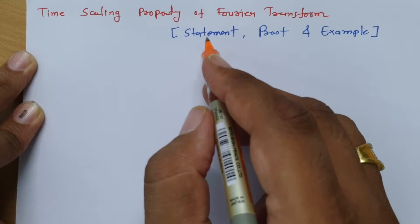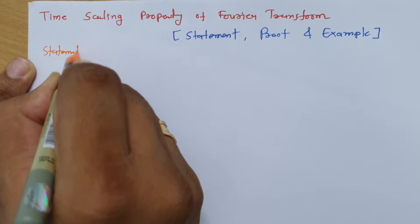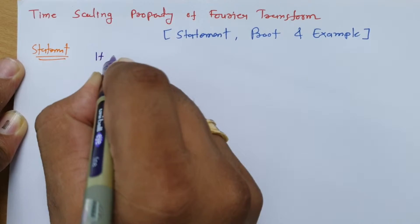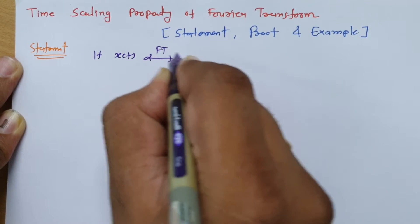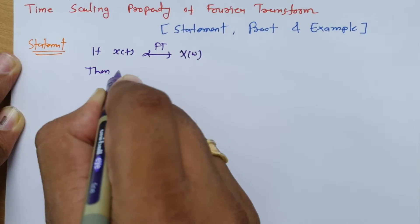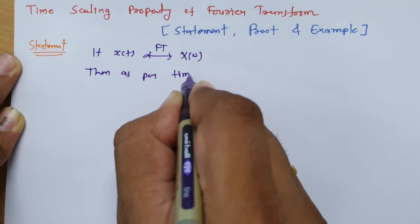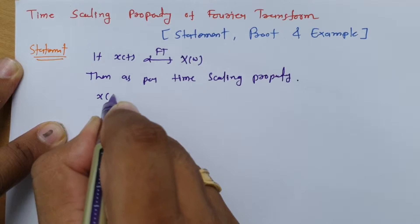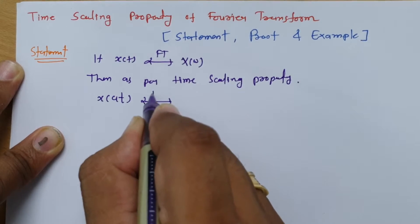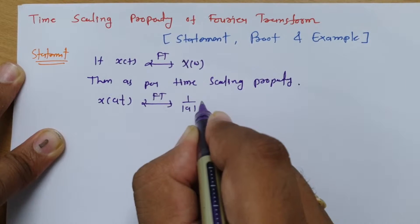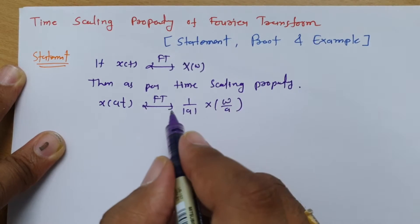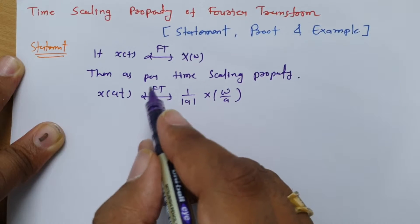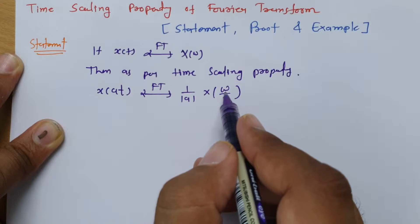Let us begin with the statement. If you have the Fourier transform of signal x(t) as X(ω), then as per the time scaling property, if we scale time by factor a, the Fourier transform of x(at) changes to (1/|a|) · X(ω/a). So this is what the time scaling property states.